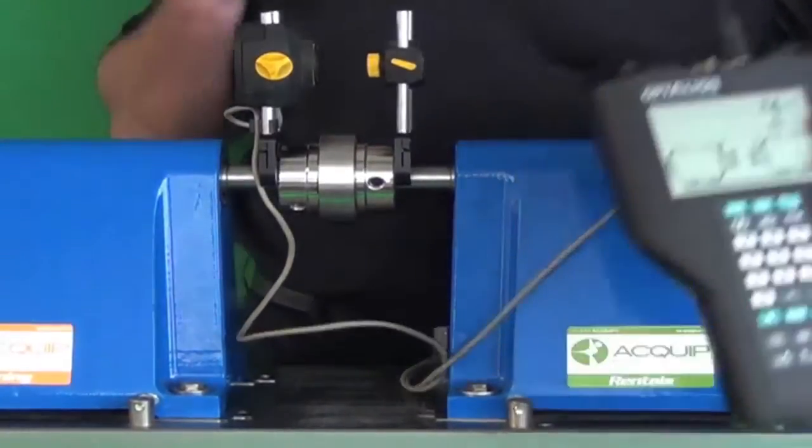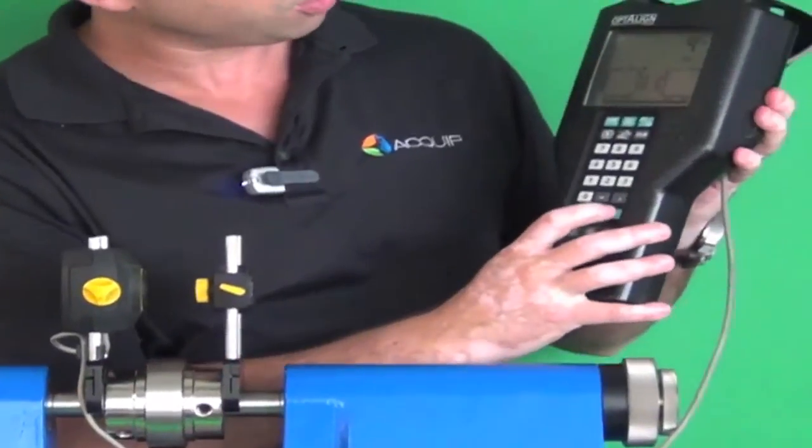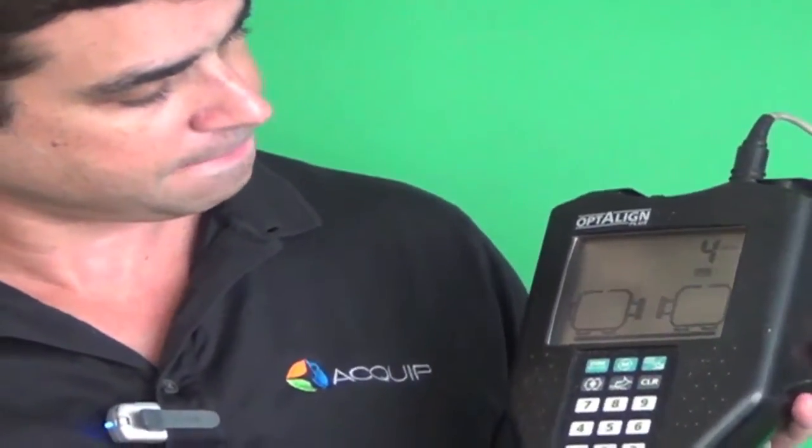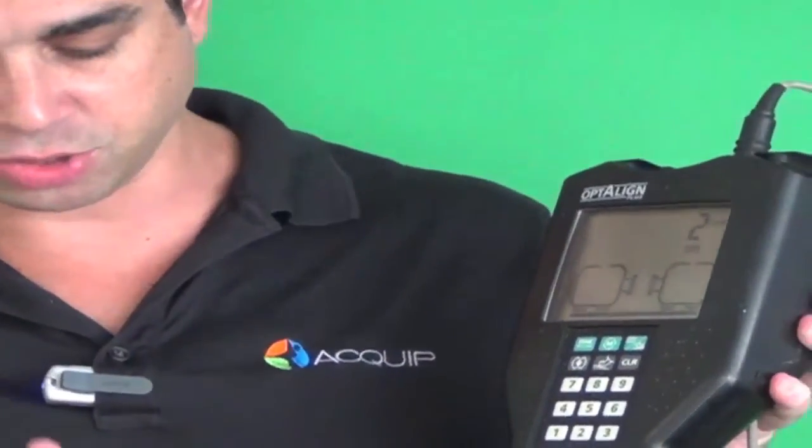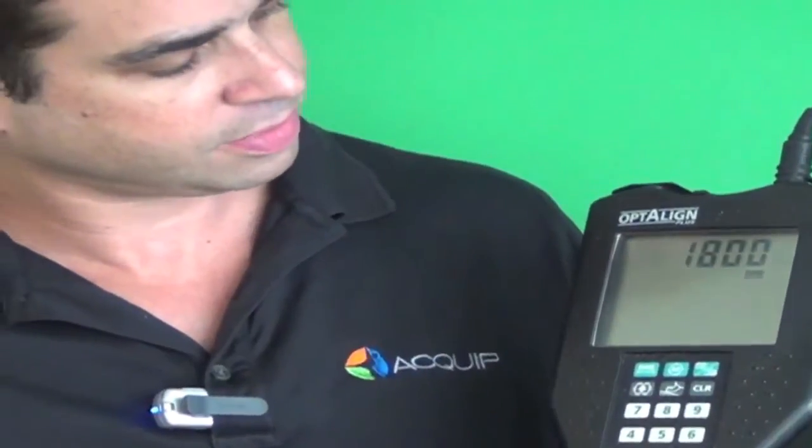The first thing that we do is enter in all of our dimensions into the system. We have the distance from the transducer to the prism, then the transducer to the center of the coupling, the coupling diameter, the speed, the transducer to the front foot and the front foot to the back foot.